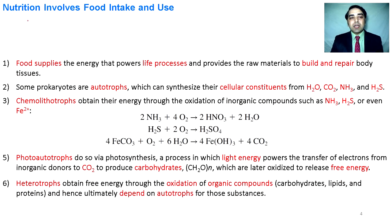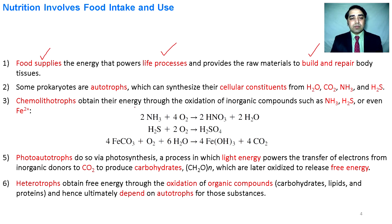Nutrition involves food intake, and the food supplies the energy utilized to sustain our life and to build and repair our body. Some prokaryotes utilize water, carbon dioxide, ammonia, and hydrogen sulfide as their energy source. Chemolithotrophs obtain their energy from simpler molecules like ammonia, hydrogen sulfide, or even from iron. Three reactions are listed here in which ammonia is utilized and energy is produced, hydrogen sulfide is utilized, and ferrous carbonate is utilized.